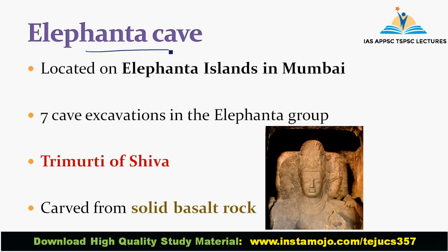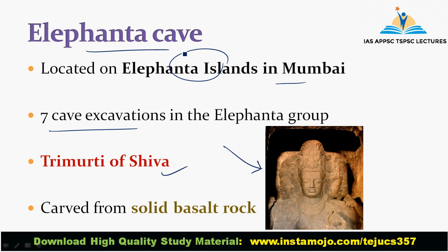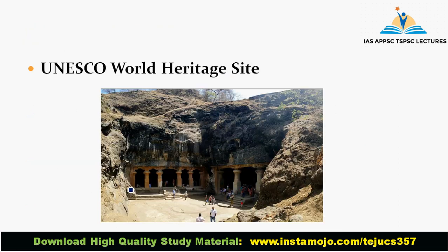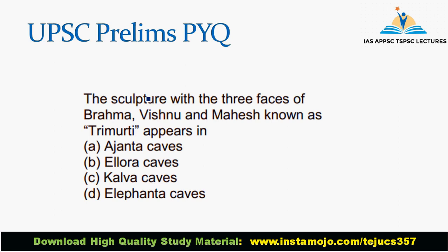Next important cave is Elephanta Cave. A total of 7 cave excavations are located in the Elephanta group. The most important structure is the Trimurti of Shiva. This cave is carved from solid basalt rock — note this contrasts with Lomasarishi which used granite. Elephanta Cave is a UNESCO World Heritage Site. A UPSC Prelims question asks: The sculpture with three faces of Brahma, Vishnu and Mahesh, known as Trimurti, appears in which cave? The answer is Elephanta.